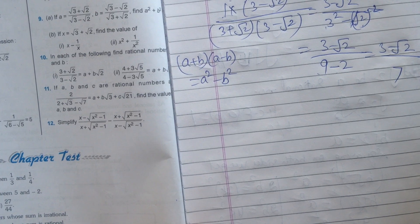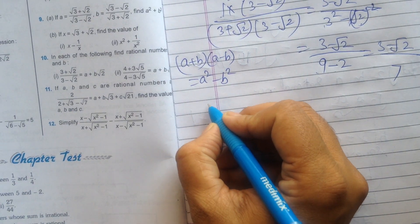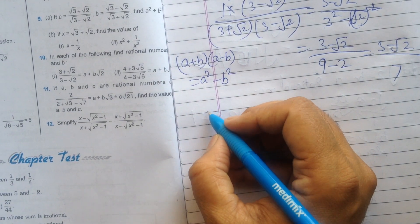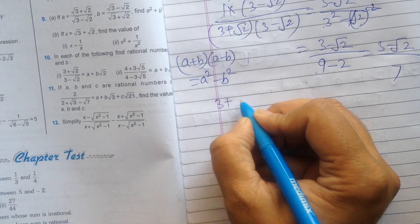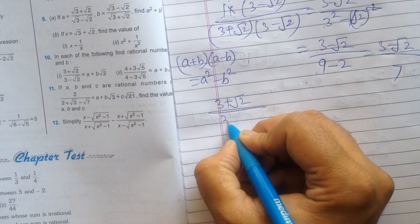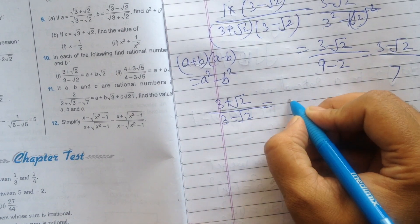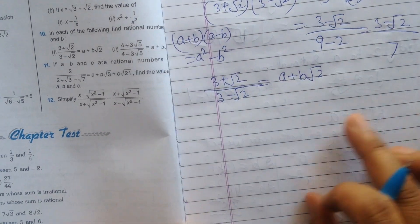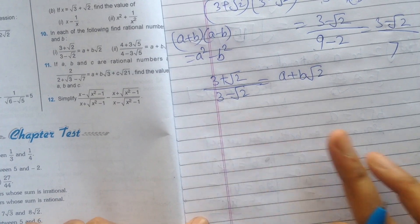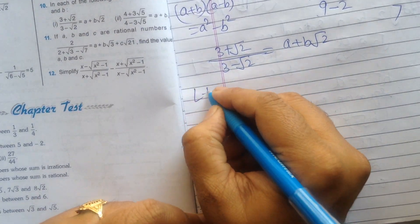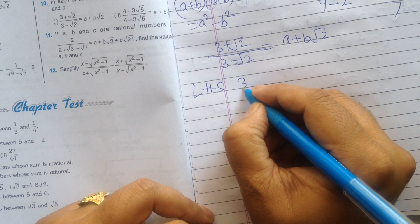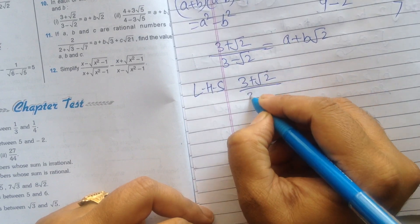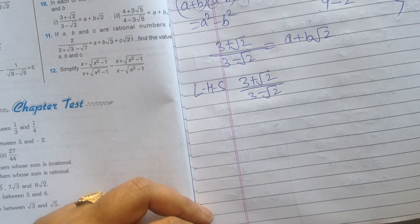Now we will do another question like find the value of a and b: 3 plus square root 2 upon 3 minus square root 2 is equal to a plus b square root 2. So we will take here the left hand side.